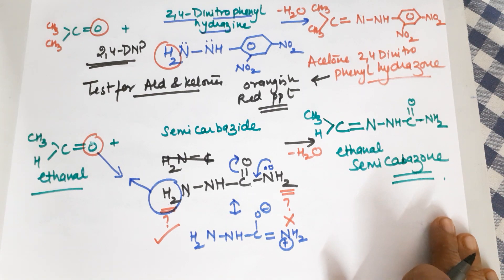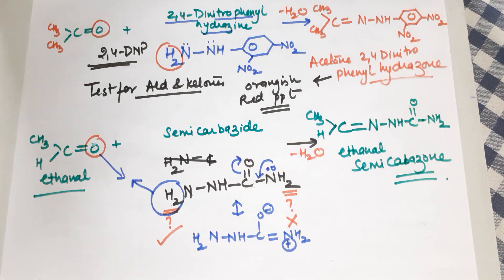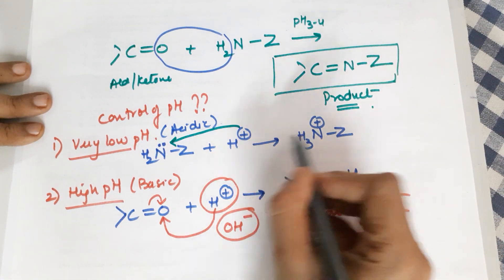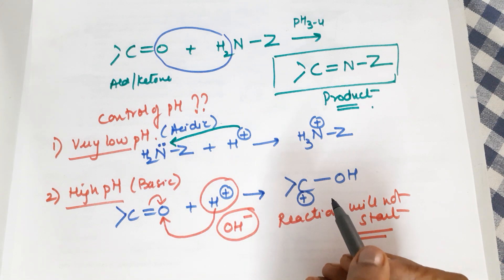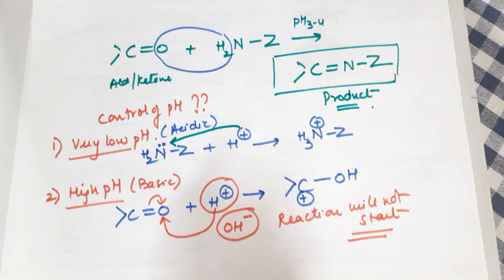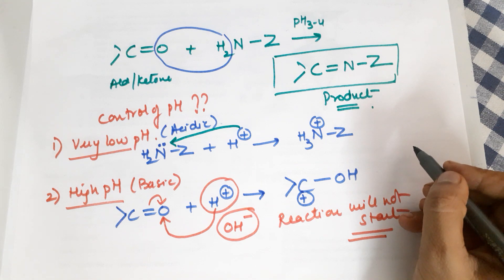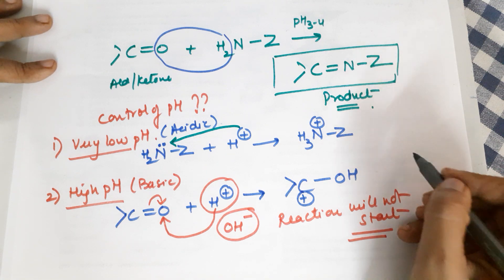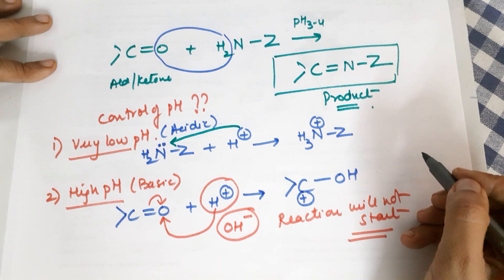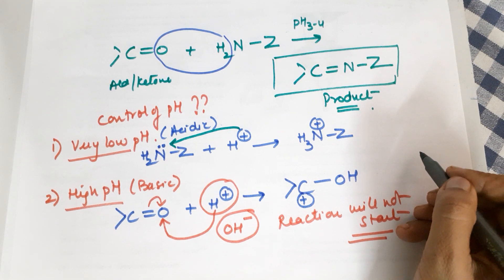With this I conclude my class. I hope you have understood the reactions of aldehydes and ketones with all the examples done, as well as why we require pH control — acidic medium causes protonation of nitrogen leaving no lone pair to attack, while basic medium prevents carbocation formation. Please keep sharing, subscribing, and forwarding to groups with more students to promote the channel. Other videos on this chapter — Aldol condensation, Cannizzaro's reaction, Wolff-Kishner, Clemmensen's reduction, Tollens' test, Fehling's test — are all covered in the playlist.